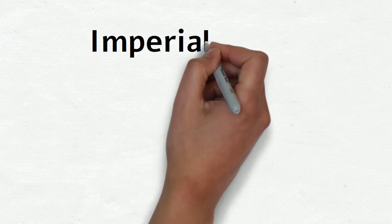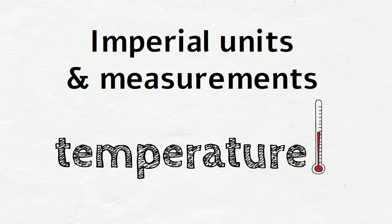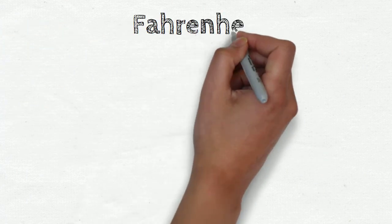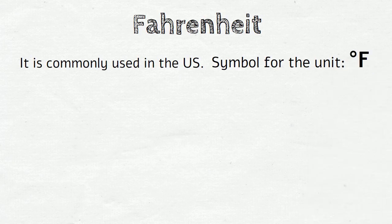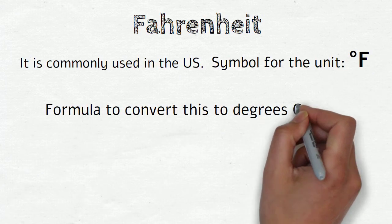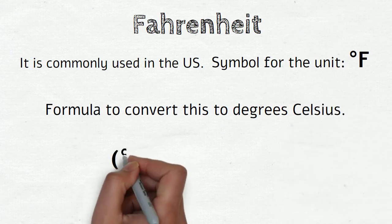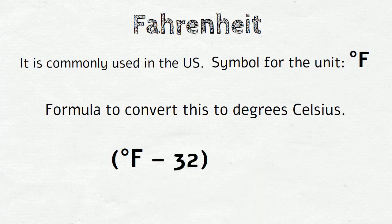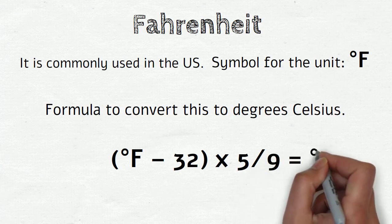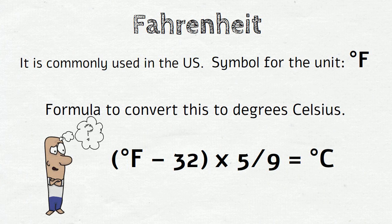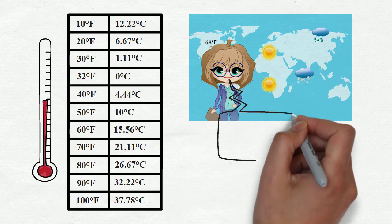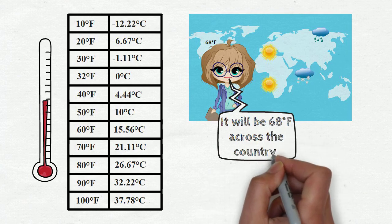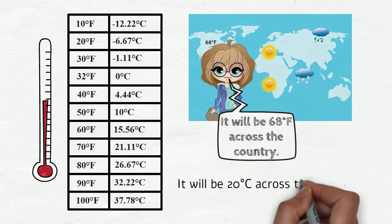Now we can move to imperial units and measurements for temperature. The common imperial unit for temperature is Fahrenheit. It is commonly used in the US. The symbol for the unit is °F. Here is the formula to convert this to degrees Celsius: the temperature in Fahrenheit minus 32 in brackets times 5 divided by 9. I know, it's quite a hassle. So instead, see this table with some common temperatures. So if the weather forecast says 'It will be 68 Fahrenheit across the country,' it means that it will be 20 degrees Celsius across the country.